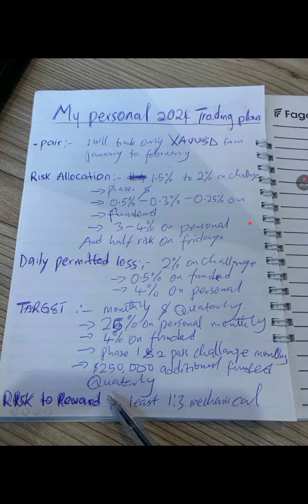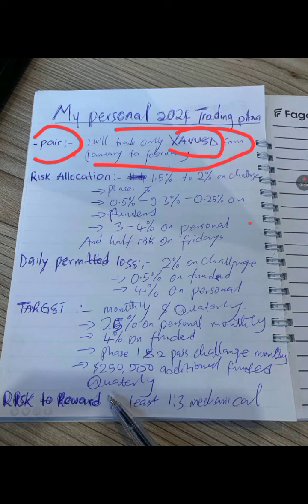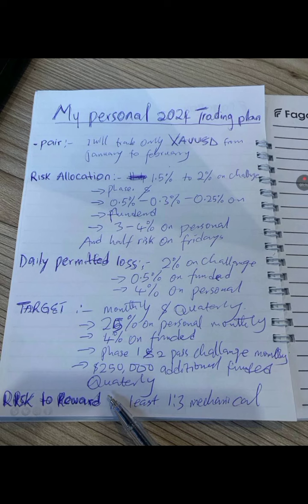Every trader should have his own unique trading plan — this is very essential. My trading plan, as you can see, is very simple and straightforward. On your trading plan you must have the pair list that you'll be trading for the year or the month. Like myself, I will be trading only gold from January to December — that is my plan.